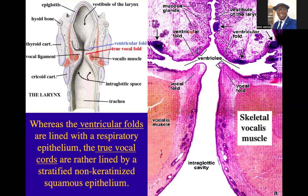The ventricular folds are lined with respiratory epithelium — described as pseudostratified columnar with goblet cells. That is the respiratory type of epithelium. Whereas the ventricular folds are lined with respiratory epithelium, the true vocal folds are lined by stratified squamous non-keratinized epithelium. This is similar to that of the vagina. So the true vocal fold region is covered by stratified squamous non-keratinized epithelium, while the ventricular fold has pseudostratified columnar epithelium with goblet cells.